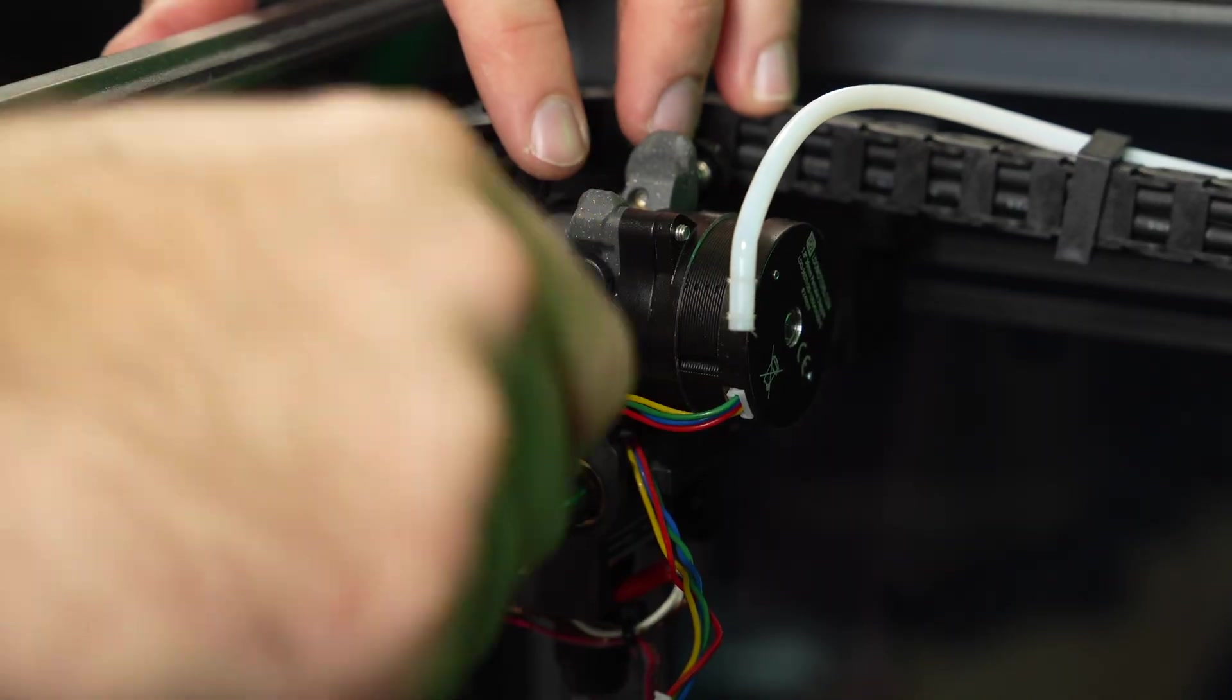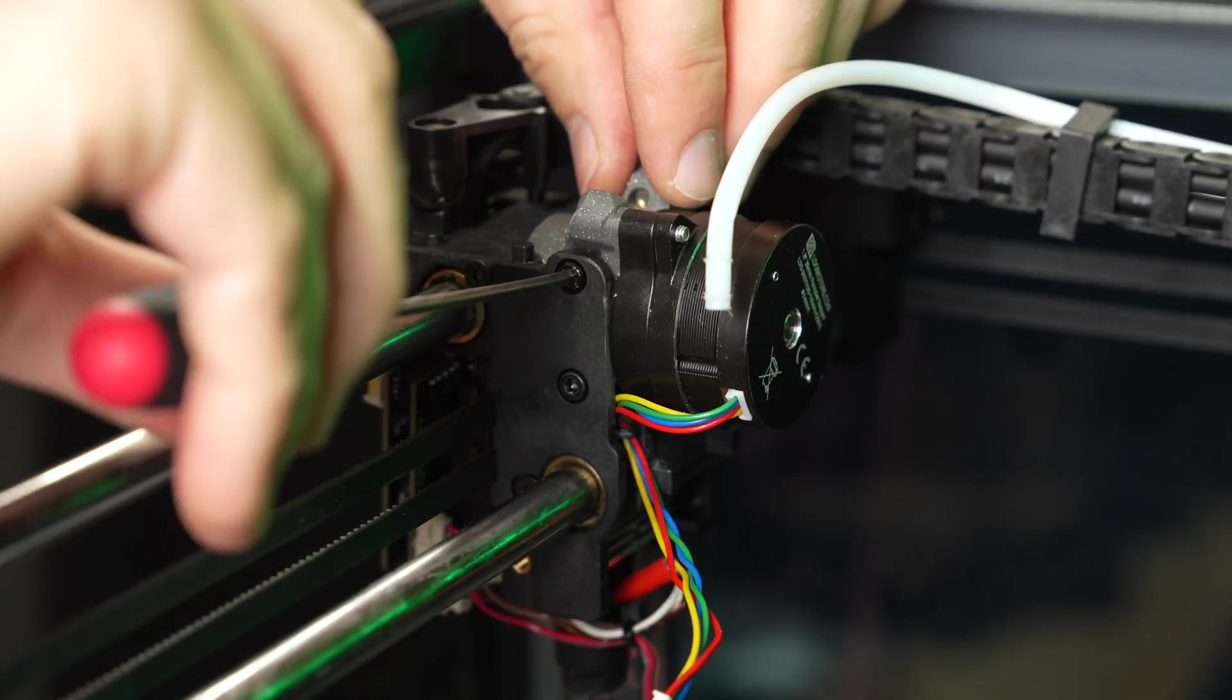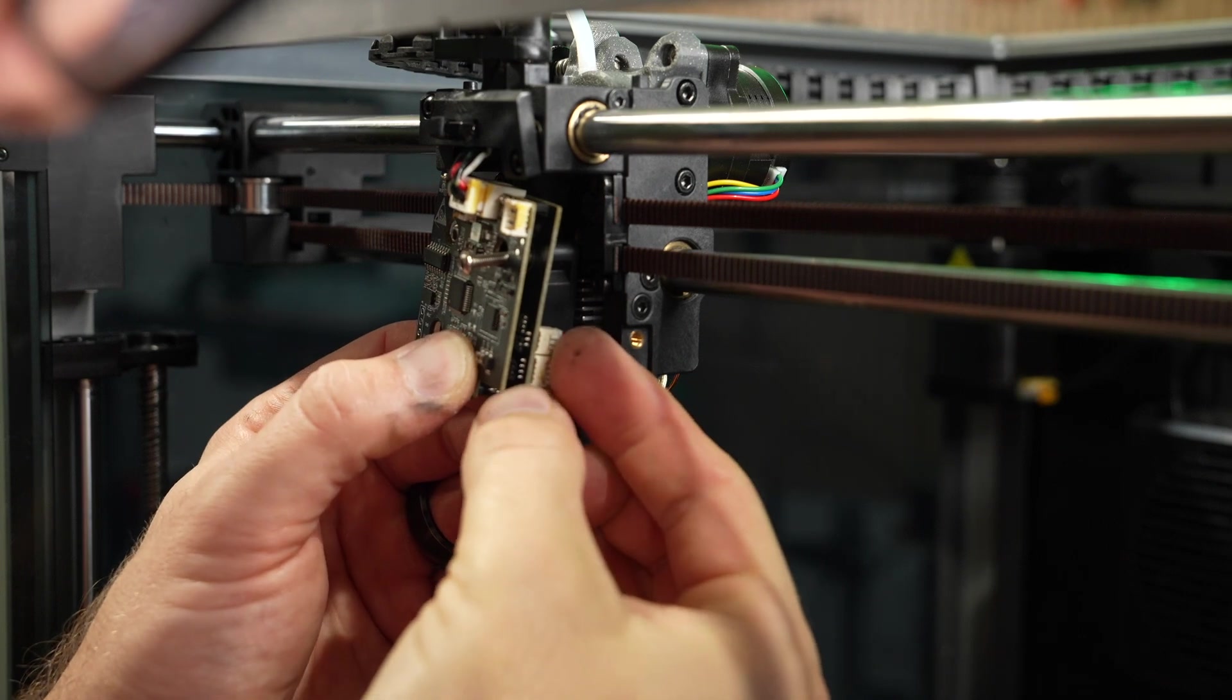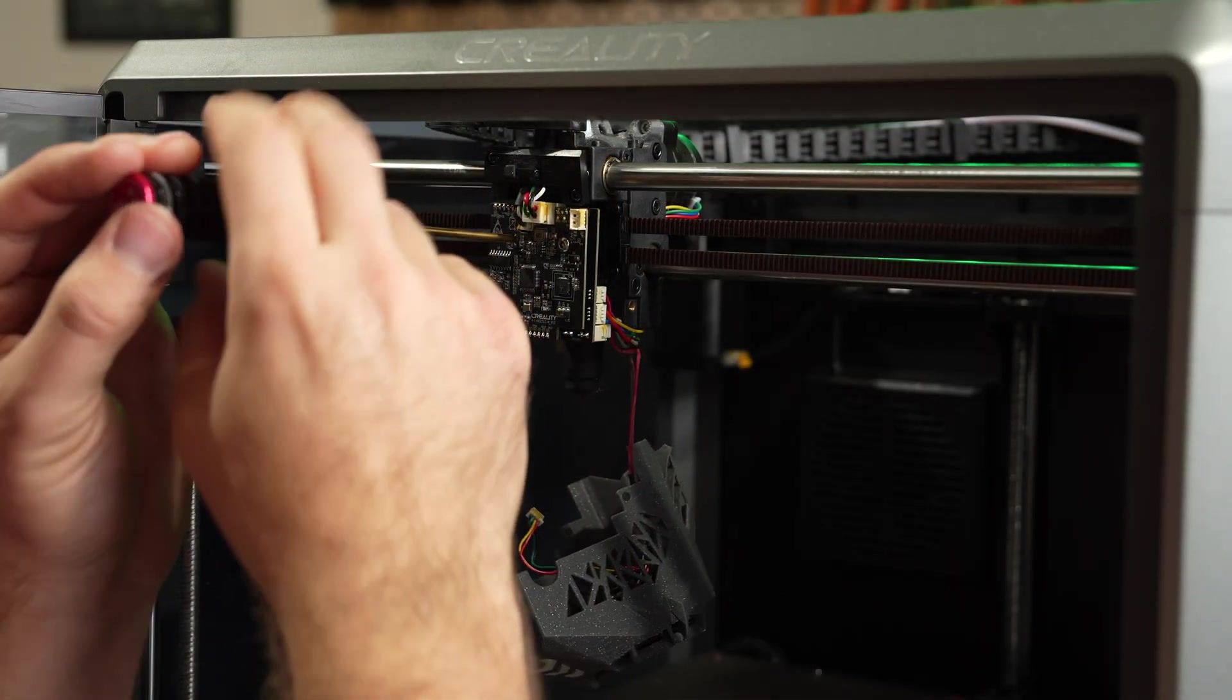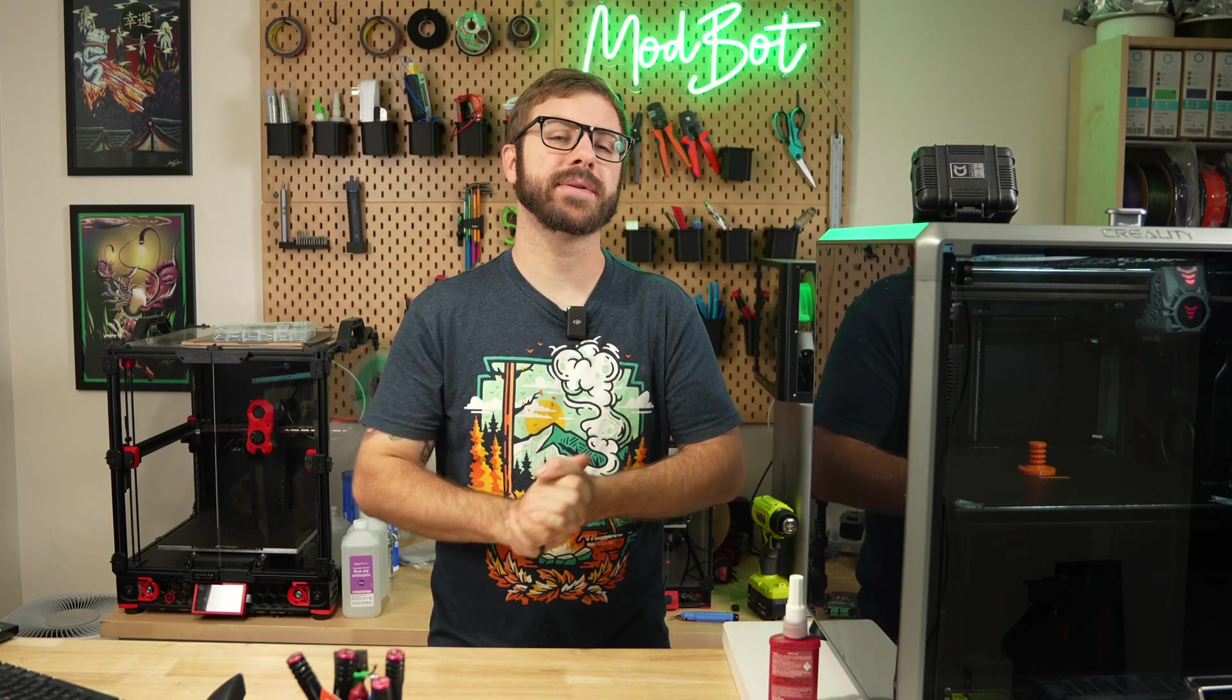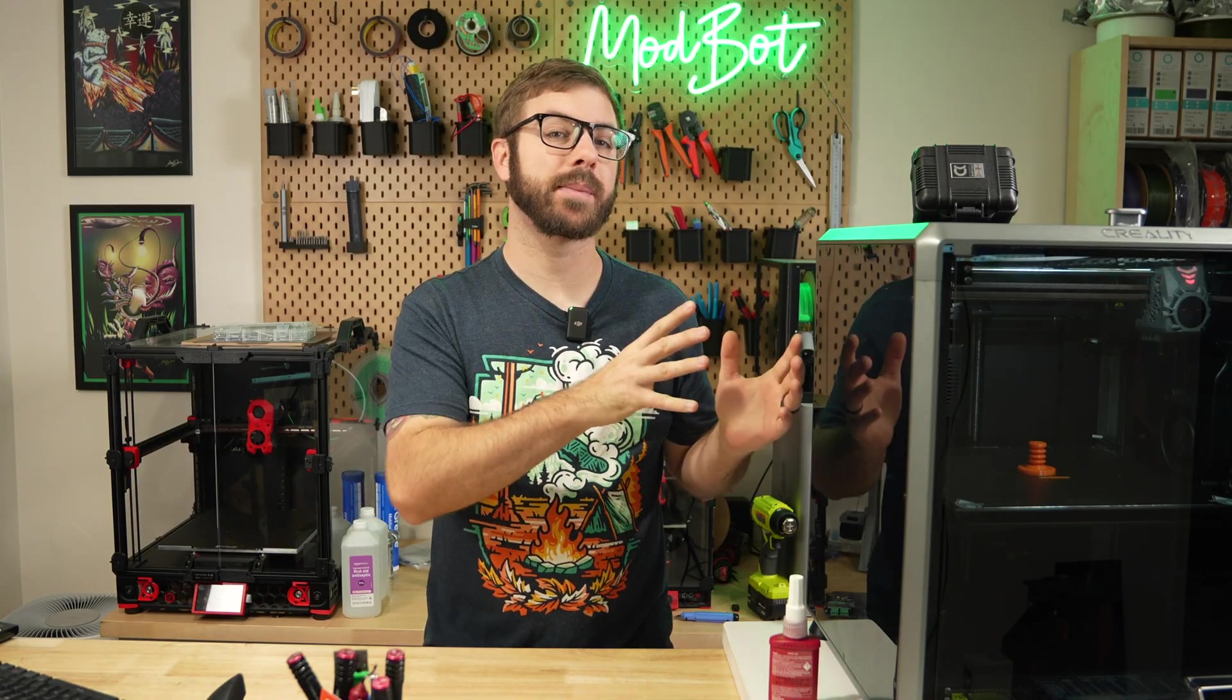Secure the new extruder in using the same screws as the stock one, connect the motor from it to the tool head board, and reinstall the main board screws along with the cover. As far as hardware goes, it is now fully installed and all that's left is to make some tweaks in Clipper.